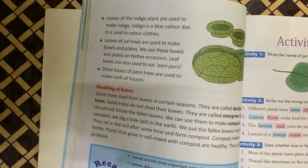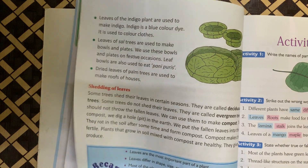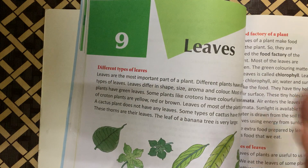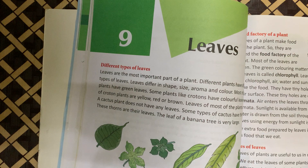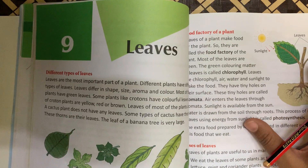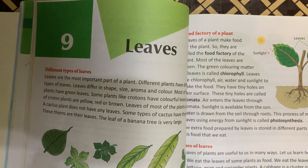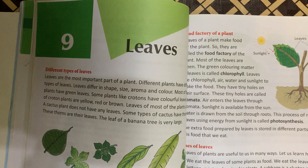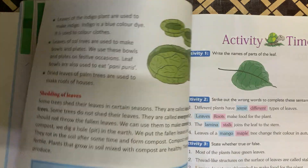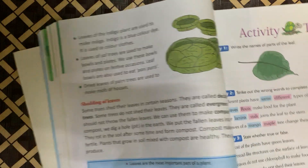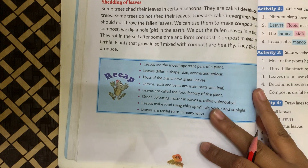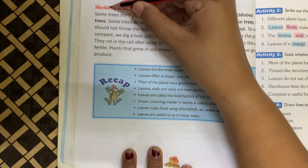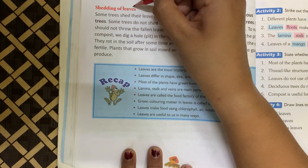Children, we have read so many things about leaves — how leaves are important for us, what are the different parts of a leaf, why a leaf is known as the food factory of the plant, and what are the different uses of leaves. Now today we are reading the last paragraph of leaves, that is shedding of leaves.